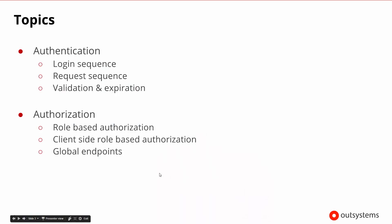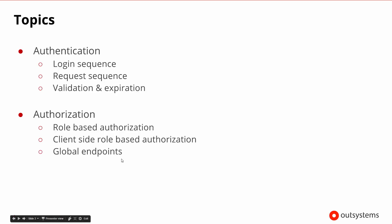Welcome to the mobile security session. The topics we'd like to cover are some information about authentication and how we log in, and what the login and request sequences look like, so that we can always validate and make sure that the right users are logged in at the right time. We want to make sure you are who you say you are in authentication, and that you then get authorized to view what you're supposed to be able to do. That is based on roles, so we have role-based authorization, and that includes both from the server side and the client side.